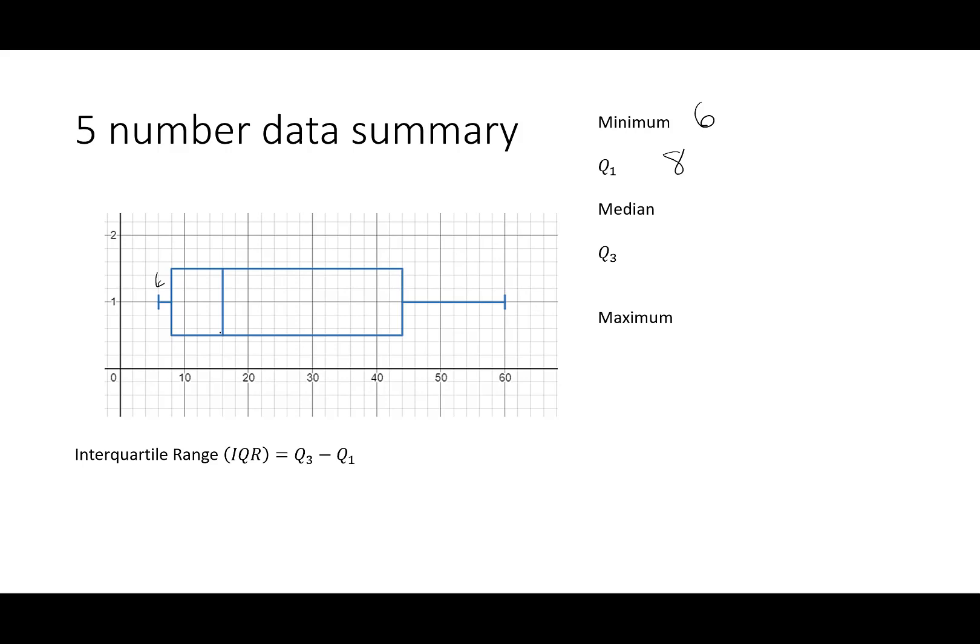The median right here. So this was 10, 12, 14, there's 16. Quartile three. So this was 40, 42, 44. So I'm just counting the lines, right? So this was 40, 42, 44. And then the maximum is at 60.